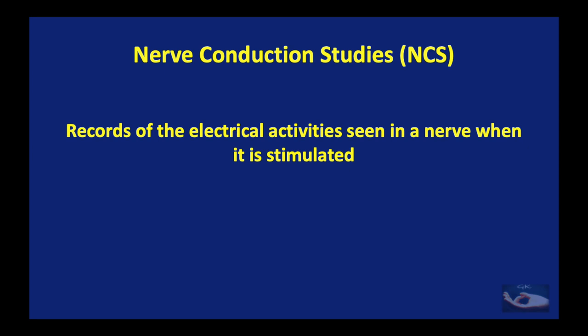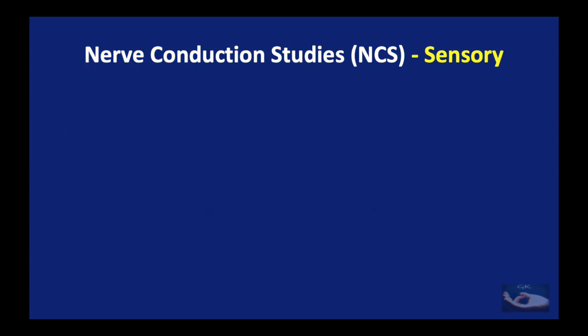Nerve conduction studies are recordings of the electrical activities seen in a nerve when it is stimulated. Basically, there are two types of nerves: sensory nerves and motor nerves, and the electrical potentials recorded in these two types are different. The recording obtained when a sensory nerve is stimulated is called the sensory nerve action potential, or SNAP. In a motor nerve, the recording is not purely from the nerve because the end organ is the muscle; the electrical activity recorded is a summation of the activity in both the nerve and the muscle, hence called the compound motor action potential, or CMAP.